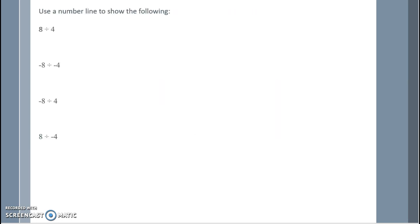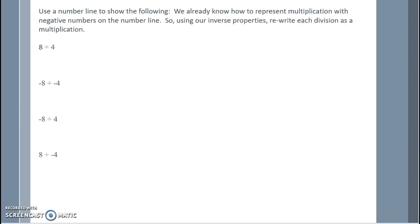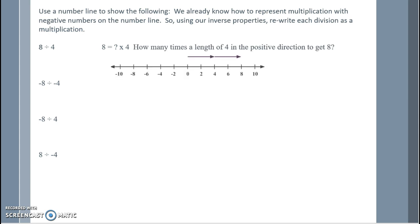Use a number line to show the following division problems. We already know how to represent multiplication with negative numbers on the number line, so let's use our inverse properties to rewrite each division as a multiplication. So 8 divided by 4 is the same as asking: 8 equals what times 4? How many times a length of 4 in the positive direction to get to 8? That would be 2 of them, positive 2.